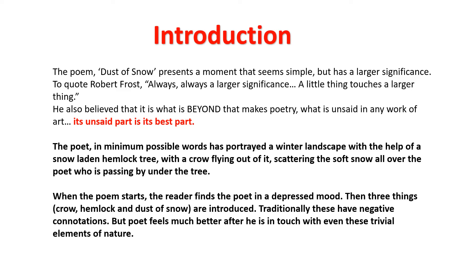When the poem starts, the reader finds the poet in a depressed mood. Then three things are introduced by the poet — crow, hemlock, and dust of snow. Traditionally, these have negative connotations; all these three are associated with negative connotations.